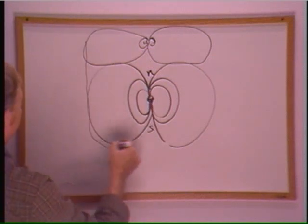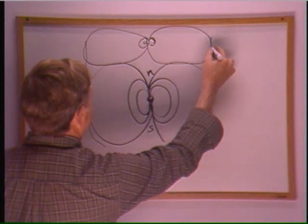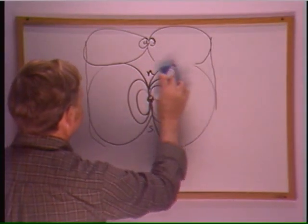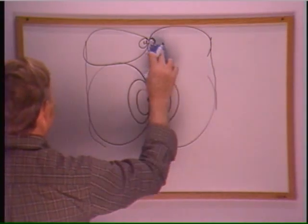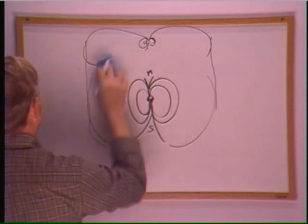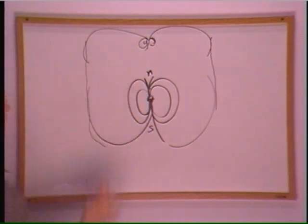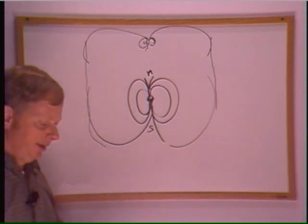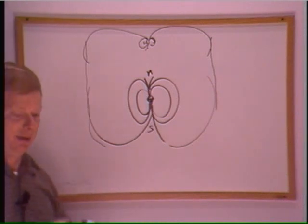and combined together to form one large magnetic line of force through all of the atoms in the metal. Now that's how you can magnetize metal.